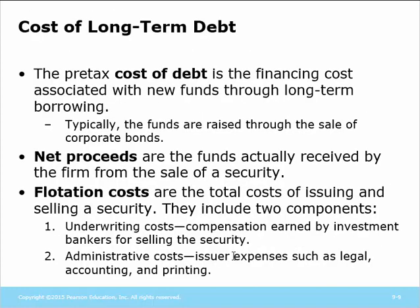We're going to start talking about cost components. How do you find the cost of long-term debt? We've already done this in a previous chapter. In the valuation chapter, we talked about the yield to maturity. The yield to maturity is the cost of debt of the company — but it's the cost of debt before taxes. We have to adjust this yield to maturity to reflect expenses the company will incur. Net proceeds are what the company actually receives when they sell the security.